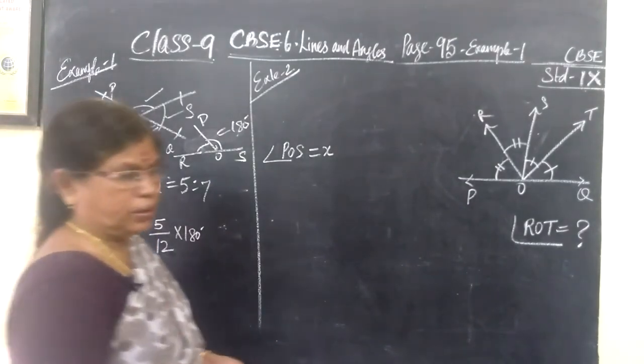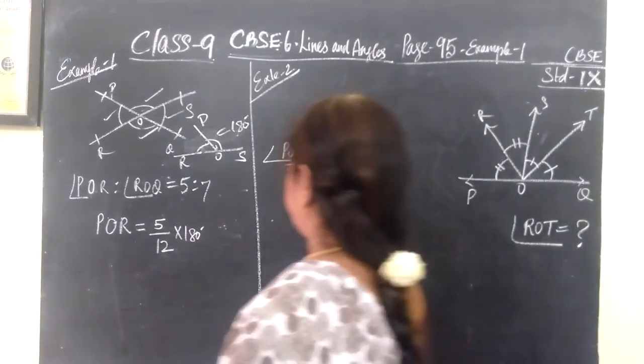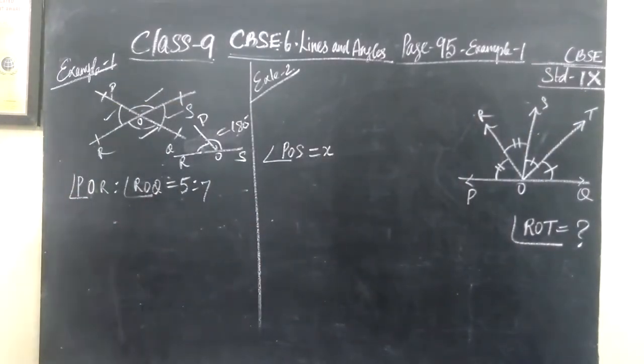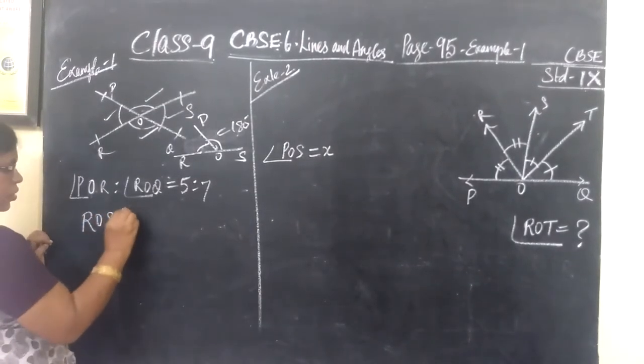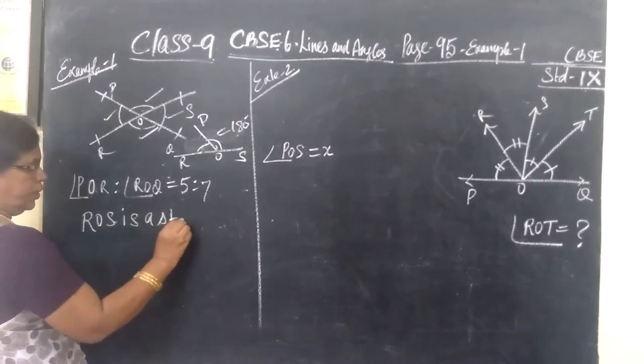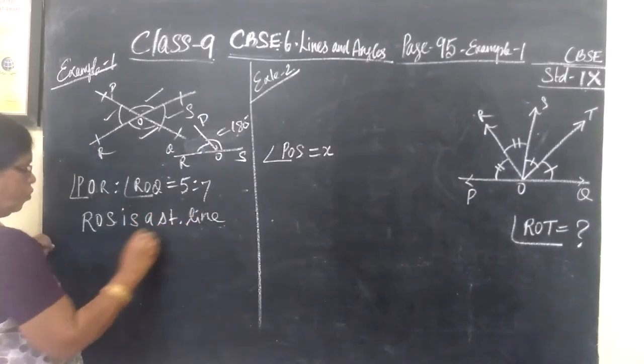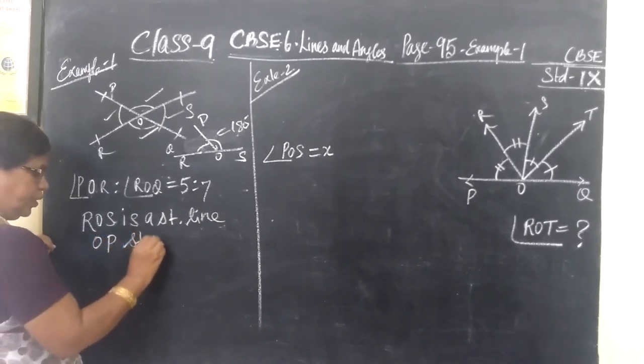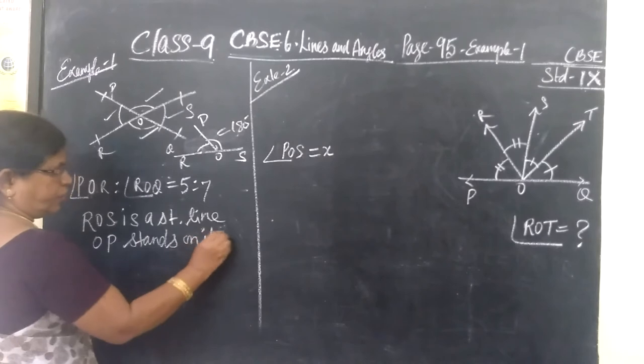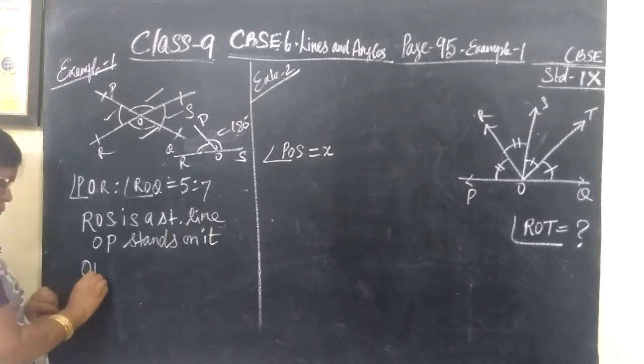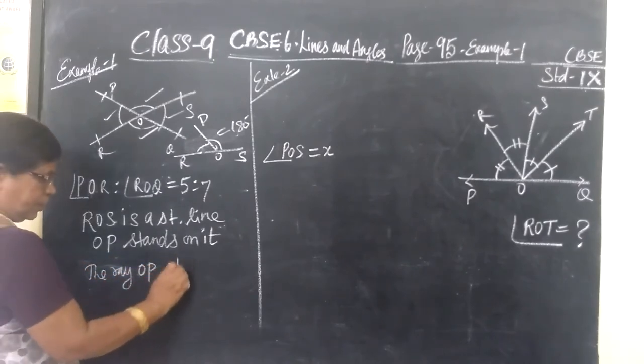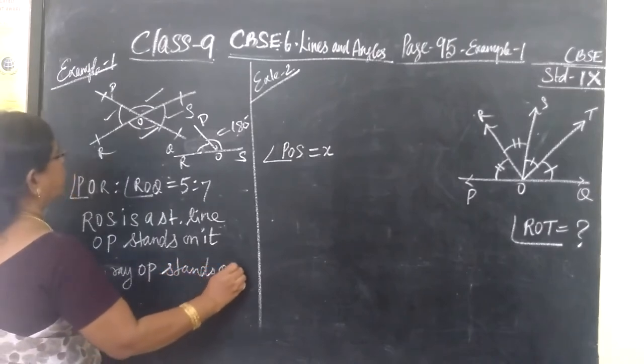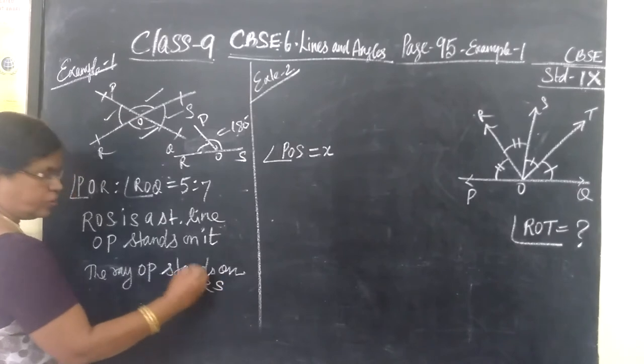Therefore sum of these two angles is equal to 180 degrees. So in this way we are finding. First we write: ROS is a straight line, OP stands on it. Or you can write the ray OP stands on RS.